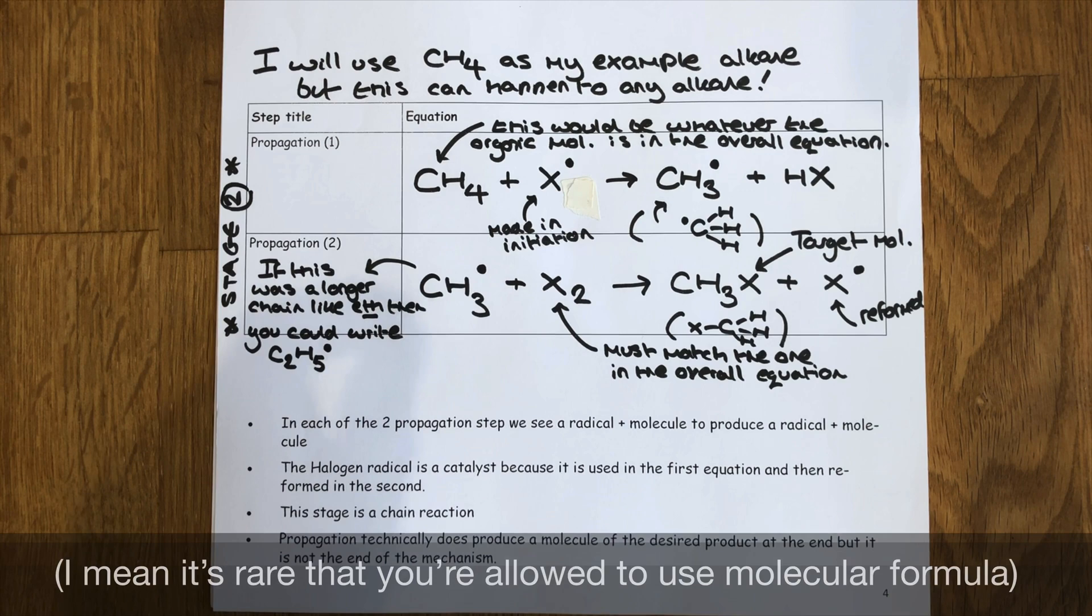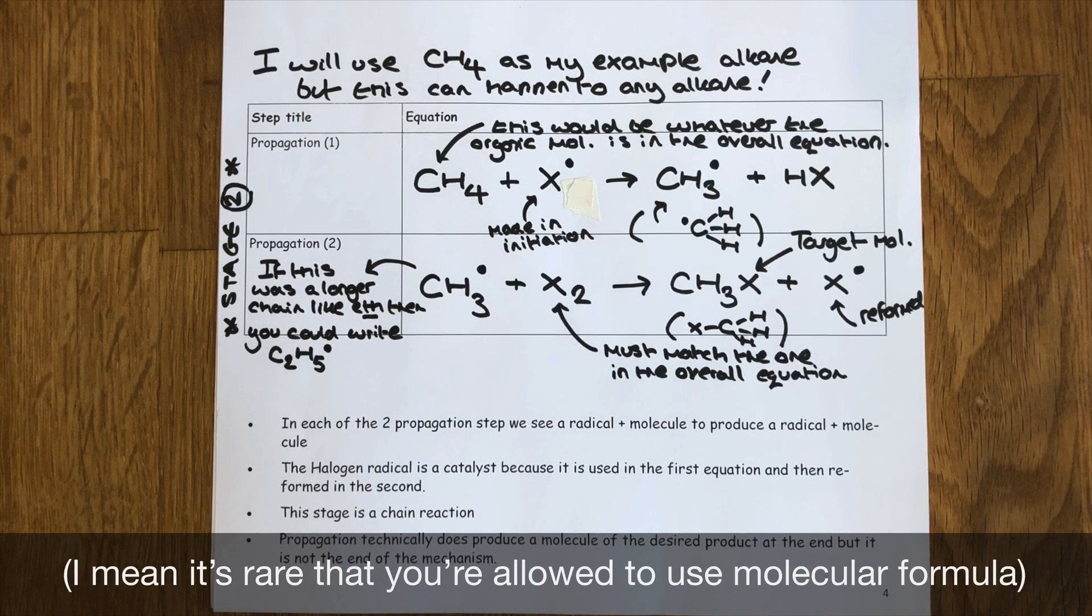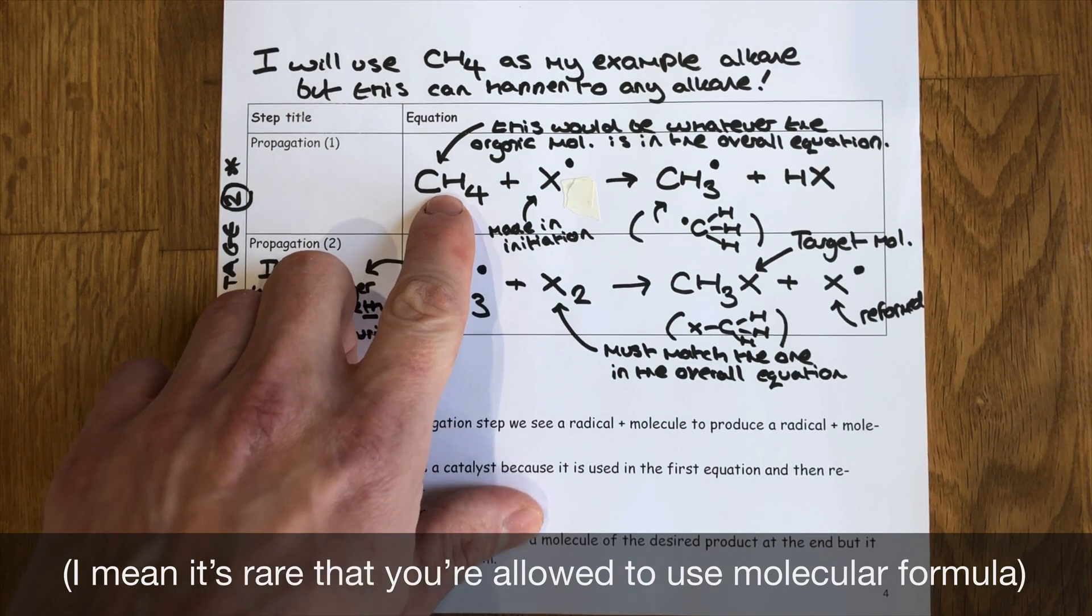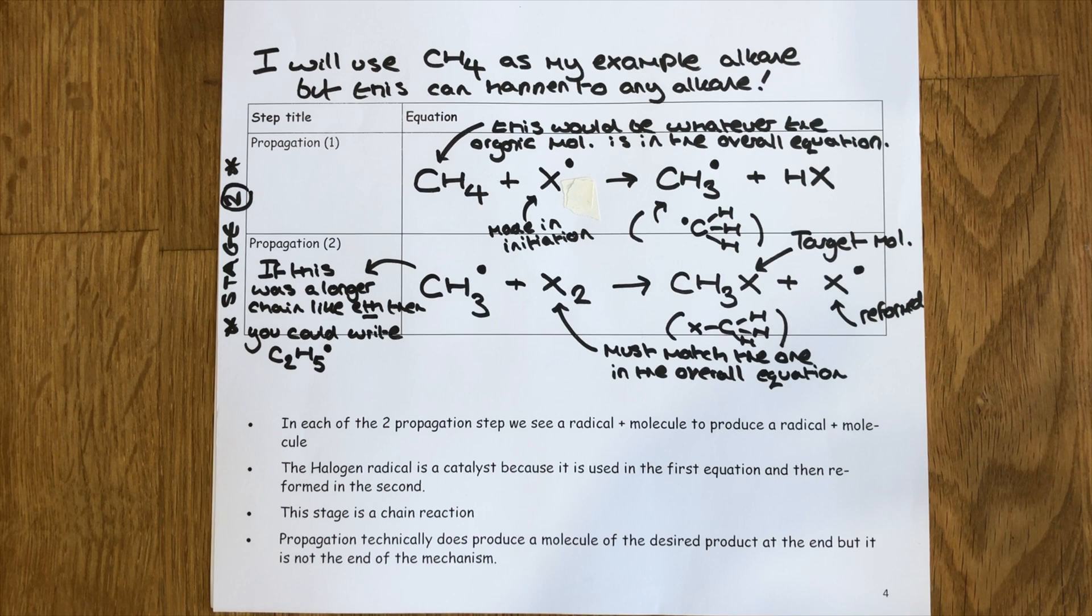You are allowed in the exam, and this is rare by the way, to actually use molecular formula for your material at this stage. So for example here if I needed to react ethane I would be allowed to write C2H6. I wouldn't be expected to draw it out in full. But if you want to draw it out, draw it out.